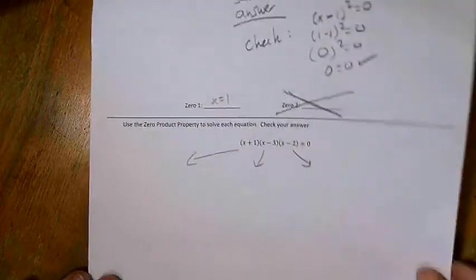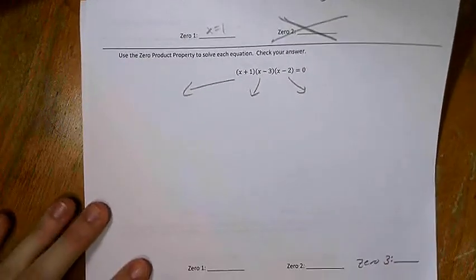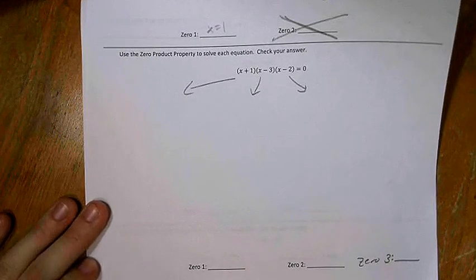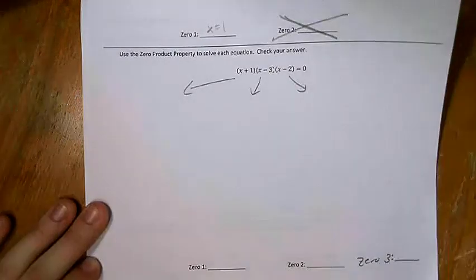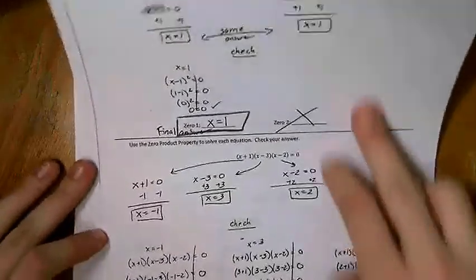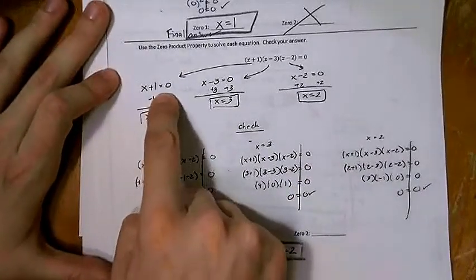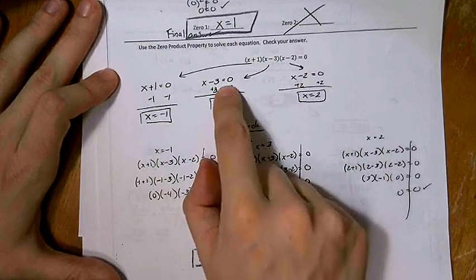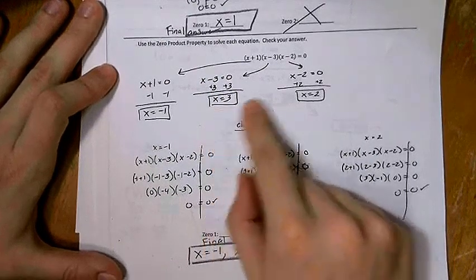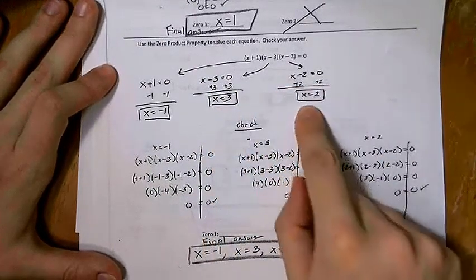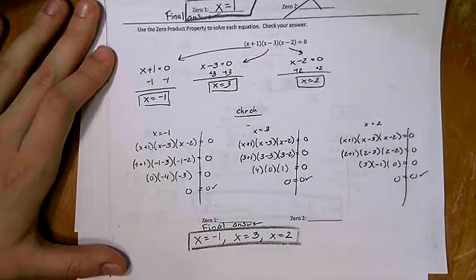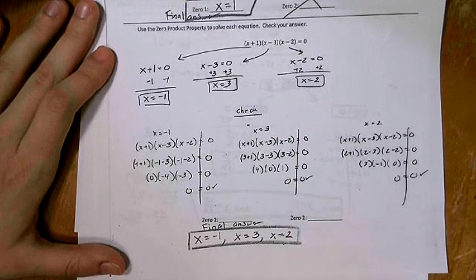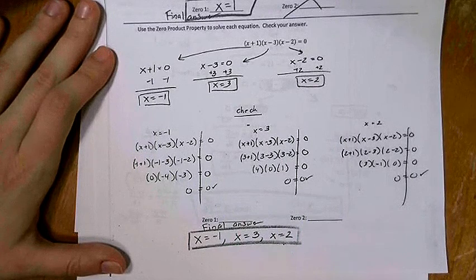For our next one, we actually have a trinomial, so you will need to find three zeros. You should have gotten: x plus 1 equals zero, so x equals negative 1; x minus 3 equals zero, so x equals 3; and x minus 2 equals zero, so x equals 2. When you plug those in to check, all three of them work out. So you have three possible zeros: x equals negative 1, x equals 3, and x equals 2. Those are the places where the graph would cross the x-axis.